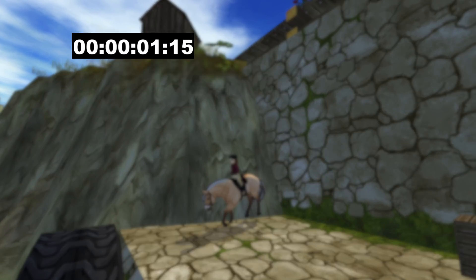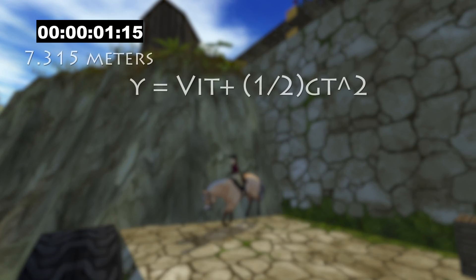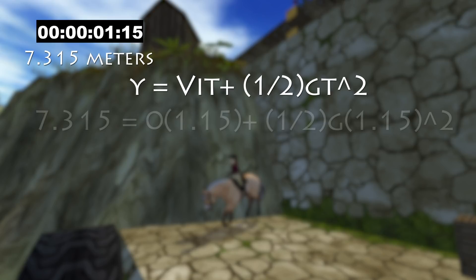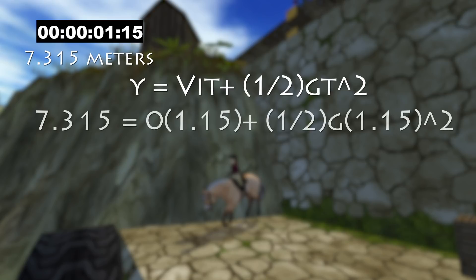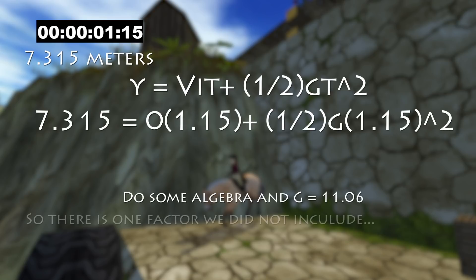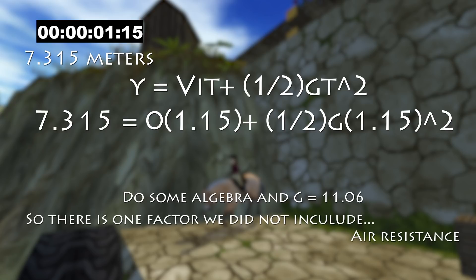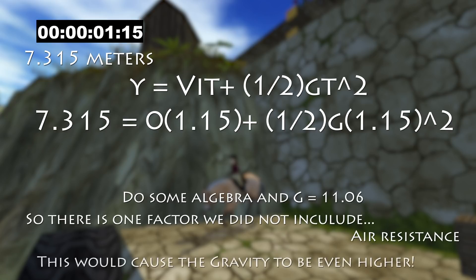Same thing — solve for time. This time it's 1.15 seconds, which is a much larger number. Going through the same process and plugging in the values, g ends up being 11.6, which is much closer to what it is on Earth. The only factor we did not include is air resistance, which would cause the gravity value to be even higher.